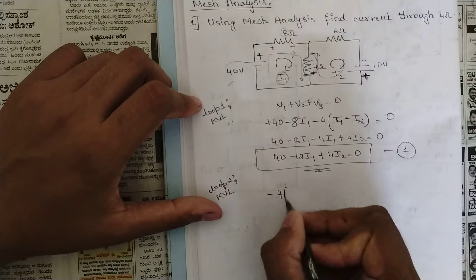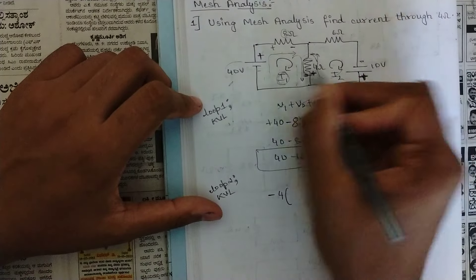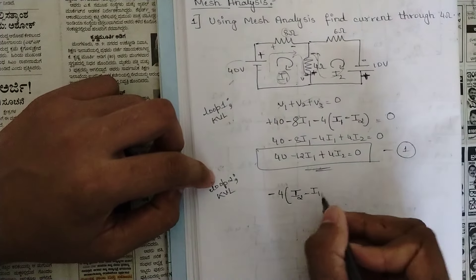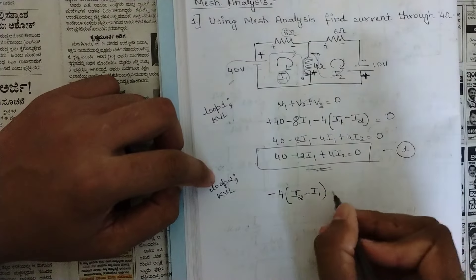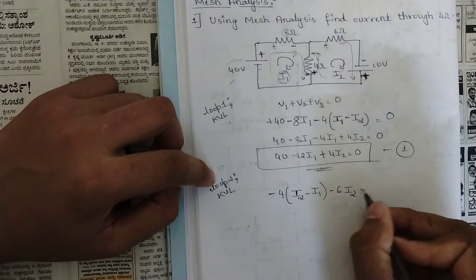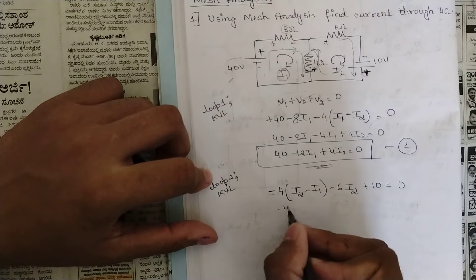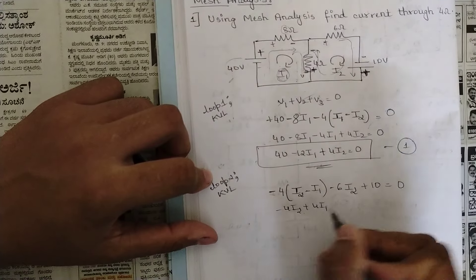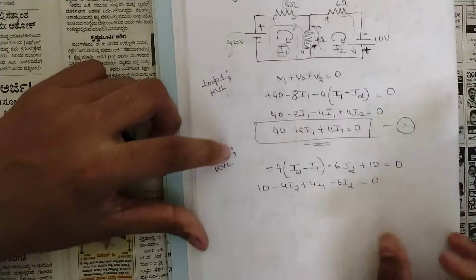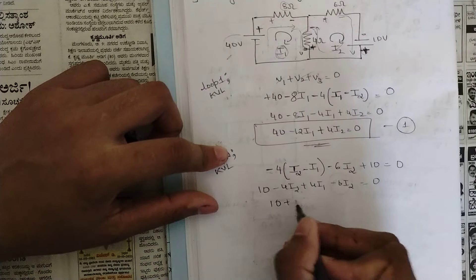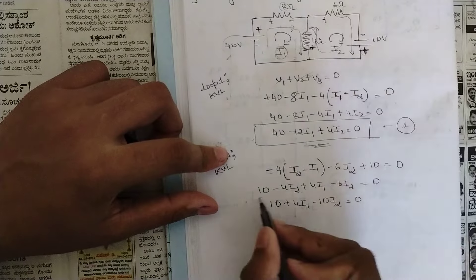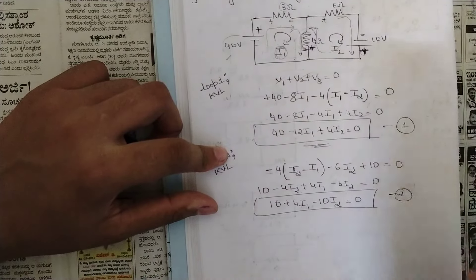For loop 2, apply KVL starting from this point. The outward sign is minus for the 4 ohm resistor, so write −4·(I2 − I1). Next, 6 ohm is minus so write −6·I2. Then +10 (the voltage source) = 0. Multiplying out: −4I2 + 4I1 − 6I2 + 10 = 0, giving 4I1 − 10I2 = −10. Name this equation 2.